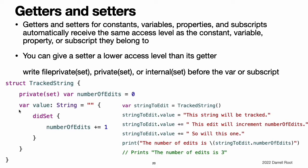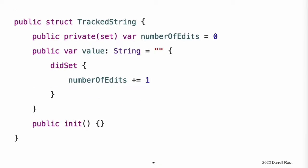This enables tracked string to modify the number of edits property internally, but to present the property as a read-only property when it is used outside the structure's definition. If you create a tracked string instance and modify its string value a few times, you can see the number of edits property value update to match the number of modifications. Although you can query the current value of the number of edits property from within another source file, you cannot modify the property from another source file. This restriction protects the implementation details of the tracked string edit tracking functionality while still providing convenient access to an aspect of that functionality. Note that you can assign an explicit access level for both a getter and a setter if required.